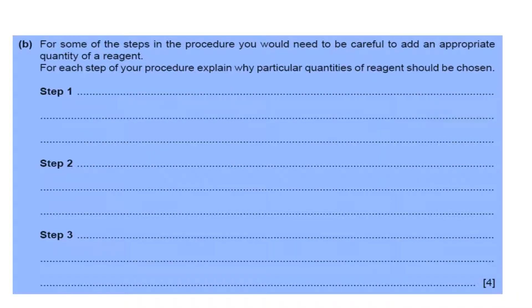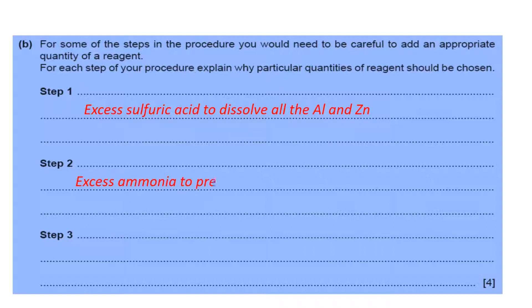For some of the step procedures, you need to be careful to add appropriate quantity of reagent. First step: excess sulfuric acid to dissolve all the aluminum and zinc. The second step: excess ammonia to precipitate aluminum hydroxide and dissolve zinc hydroxide.